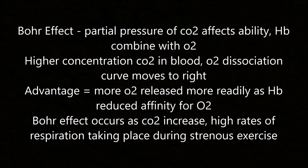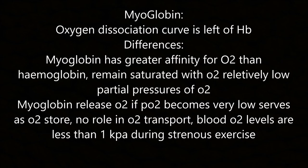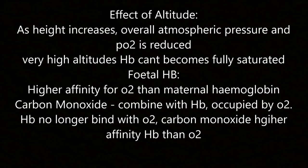The Bohr effect occurs when CO2 increases during high rates of respiration, such as strenuous exercise. Myoglobin has a dissociation curve to the left of haemoglobin — myoglobin has a greater affinity for O2 and remains saturated at relatively low partial pressures. Myoglobin releases O2 only when the partial pressure becomes very low, serving as an O2 store rather than having a role in O2 transport. Blood O2 levels can fall below 1 kPa during strenuous exercise.